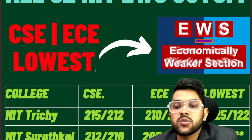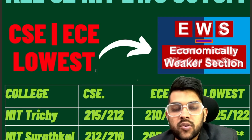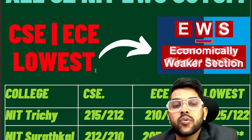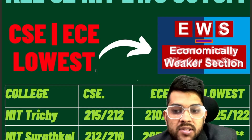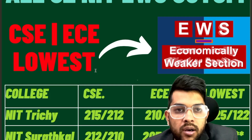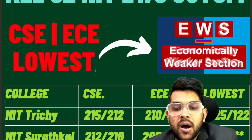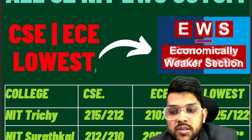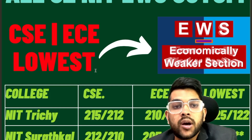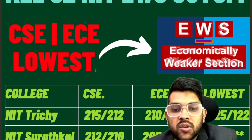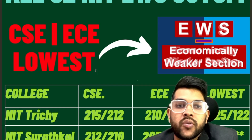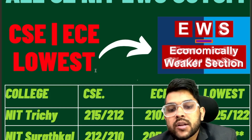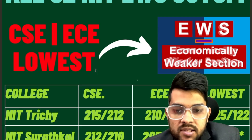These marks are for the first attempt and a moderate paper. If you go for a second attempt, or if the paper is easier or harder, the marks will change accordingly. Also, these are the cutoffs for other state status — if you are from the home state of any college, you can get admission with slightly less marks.